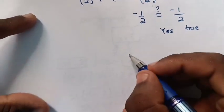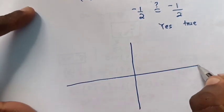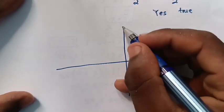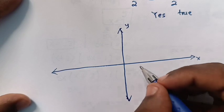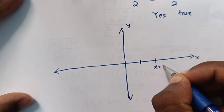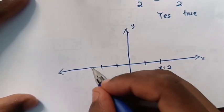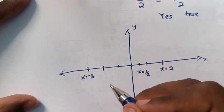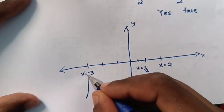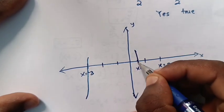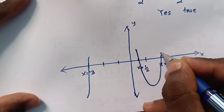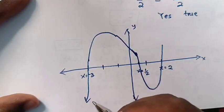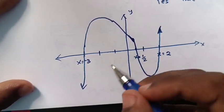We are going to draw a graph of this cubic equation, which passes through the x-intercepts at the values of x. This is the x-axis and this is the y-axis. The first value is x equals 2, another is x equals negative 3, and another is x equals one half. When we draw the graph, it passes through these three points — at negative 3, at one half, and at 2. These are the x-intercepts.